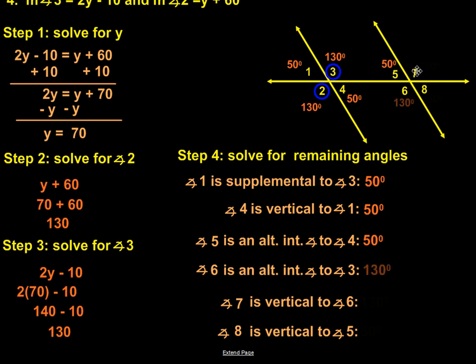Angle seven is a vertical angle to angle six, which means they have to be congruent. And angle eight is a vertical angle to angle number five, which means they have to be congruent.